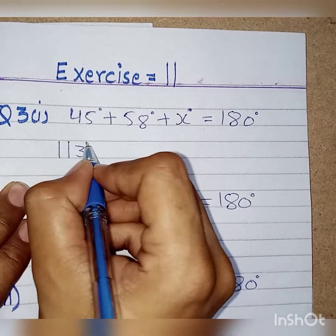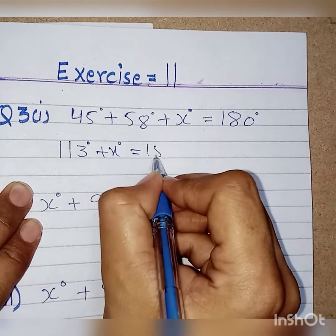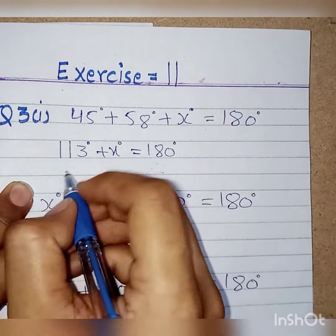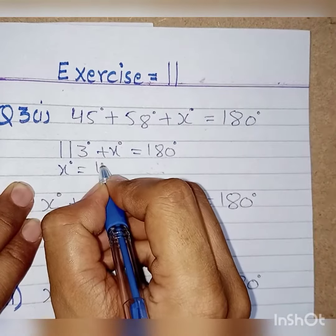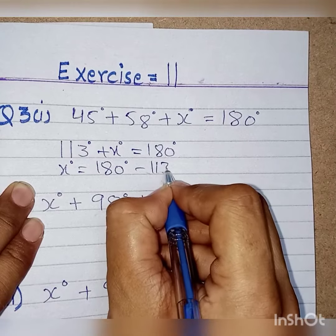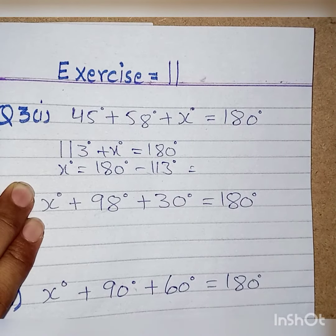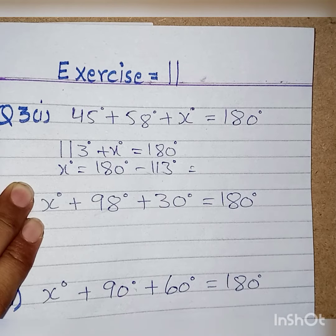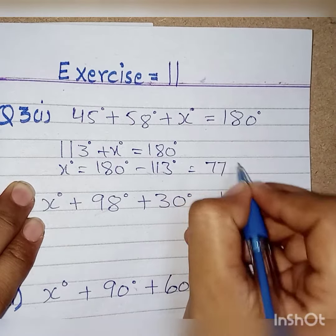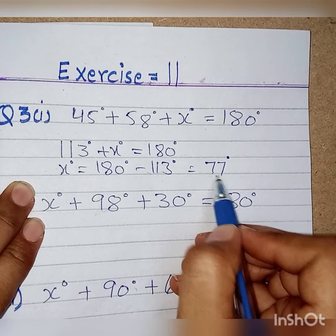113 degrees plus x degrees is equal to 180 degrees. What we do is x equals 180 degrees minus 113 degrees. When we minus, then we get 77 degrees. It means that x's value is 77 degrees.